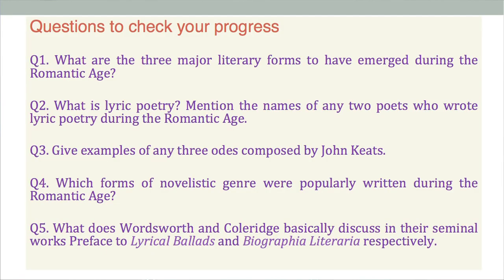With this we come to the end of the discussion. I shall leave you with a few questions to check your progress. Question 1: What are the three major literary forms to have emerged during the Romantic Age? Question 2: What is lyric poetry? Mention the names of any two poets who wrote lyric poetry during the Romantic Age. Question 3: Give examples of any three odes composed by John Keats. Question 4: Which form of novelistic genre was popularly written during the Romantic Age? Question 5: What does Wordsworth and Coleridge basically discuss in their seminal works titled Preface to Lyrical Ballads and Biographia Literaria respectively?